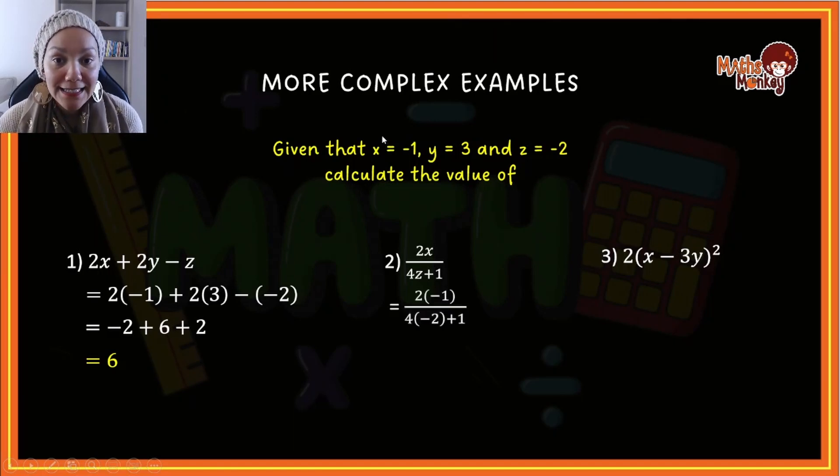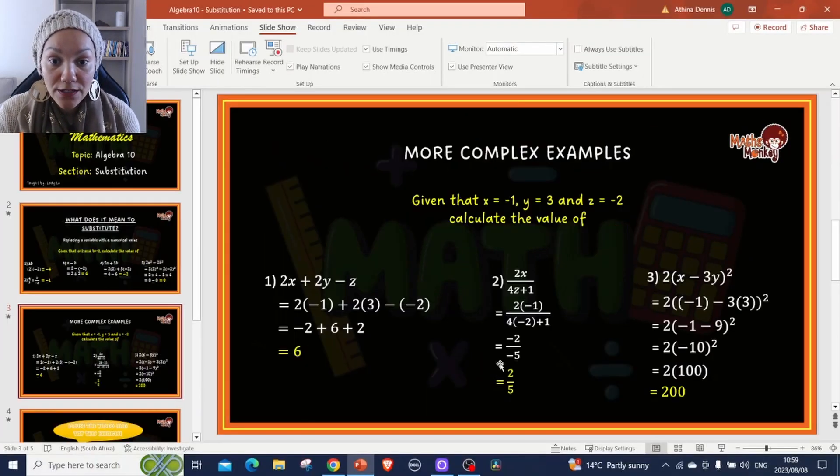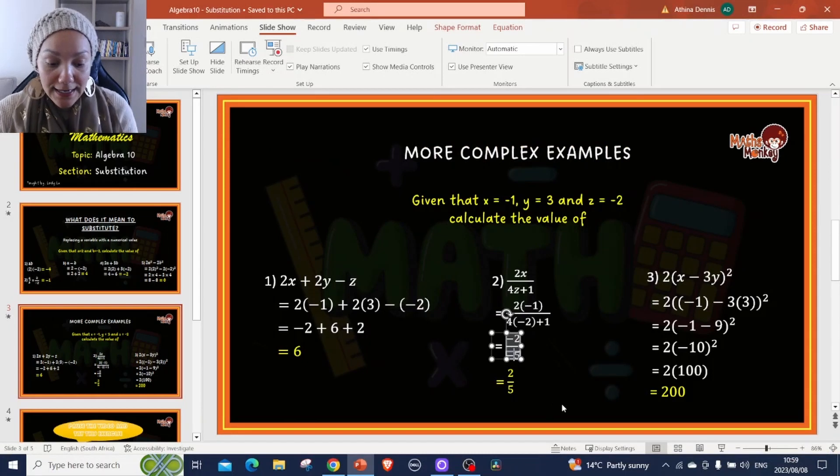x is negative 1, so 2 times negative 1 we will place there, and z is negative 2, so 4 times negative 2 plus 1. So we simplify the numerator: 2 multiplied by negative 1 is negative 2, and then 4 multiplied by negative 2 is negative 8 plus 1 gives me negative 7.